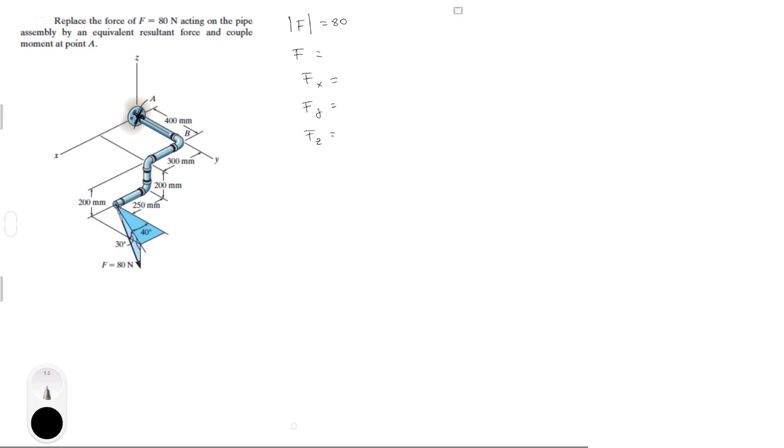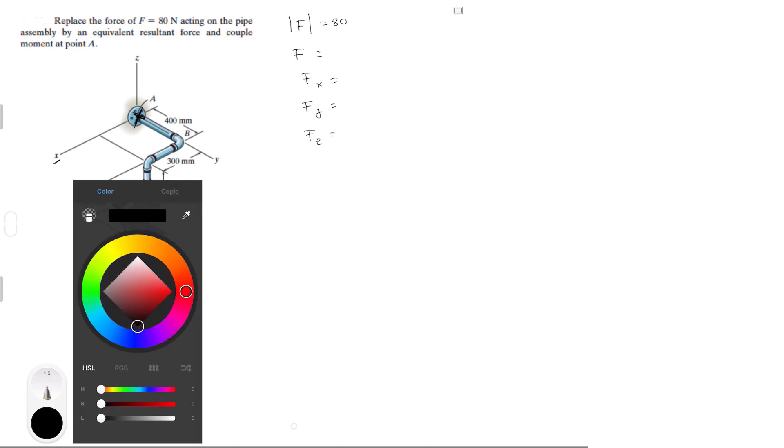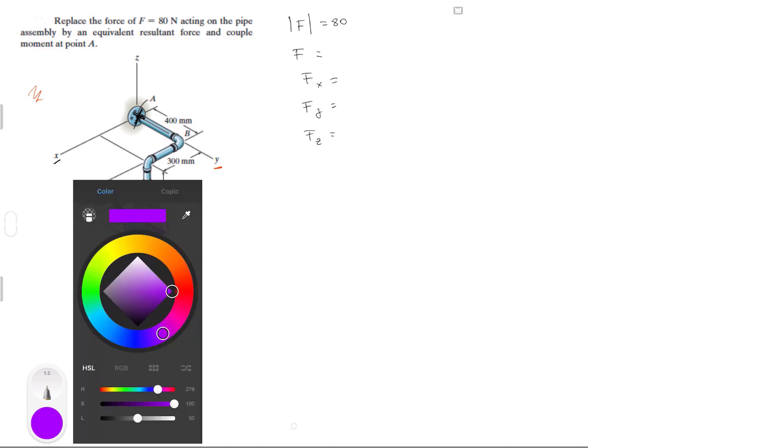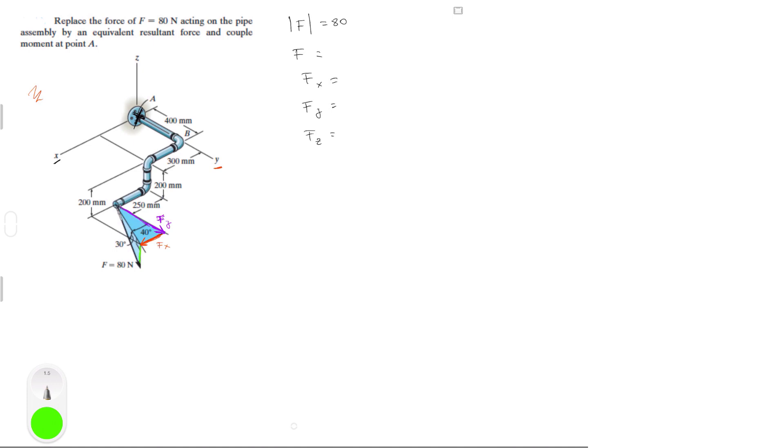And let me draw them on the diagram so you see them. This is the X axis. Let me see if I can make another color. This right here is F of X. This is Y, so let's pick a different color for Y. This right here is F of Y. And a different color for Z. This right here is F of Z.